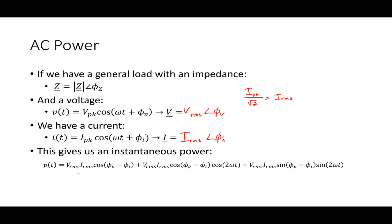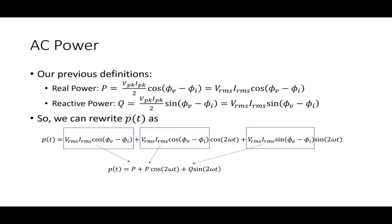Where that ended us previously was that the instantaneous power can be given by this expression. The real power or active power was P equal to V peak I peak over two times this cosine relationship, or V RMS I RMS times this cosine relationship. Similarly, the reactive power is V peak I peak over two times the sine of phi V minus phi I, or simply V RMS I RMS times the sine.